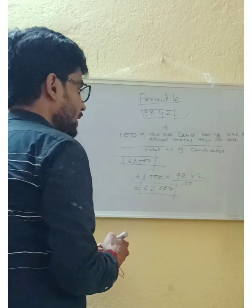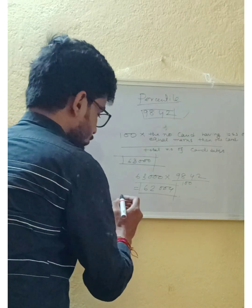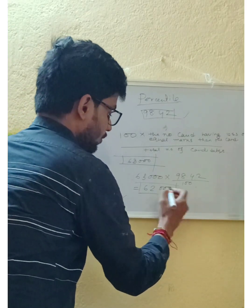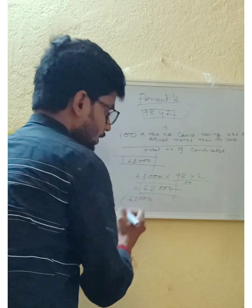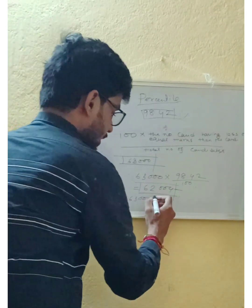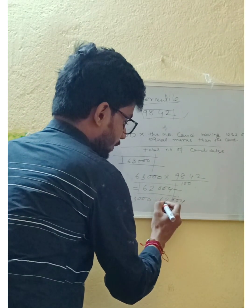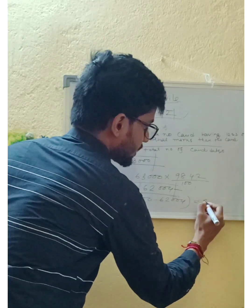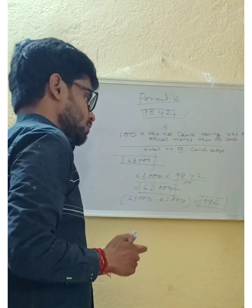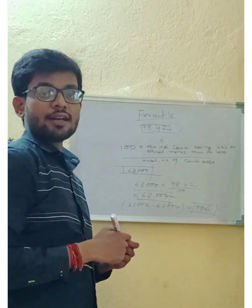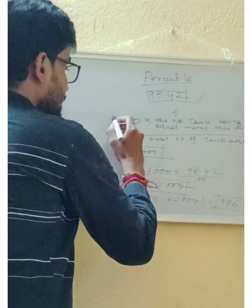So what is your rank? To predict your rank, you subtract that amount from the total number of candidates. The total was 63,000 and you scored more than 62,004 candidates, so your rank in the CSIR examination will be 996.